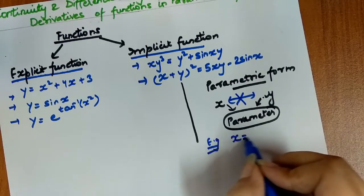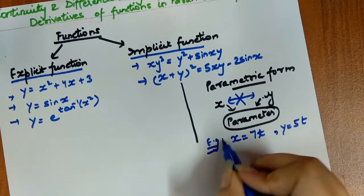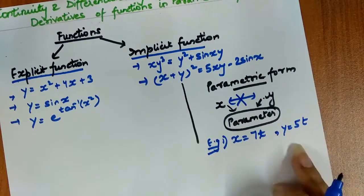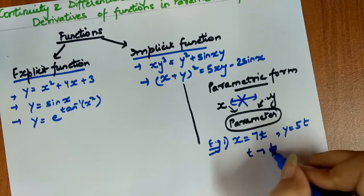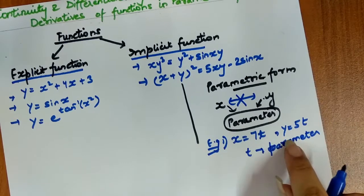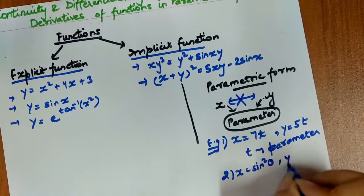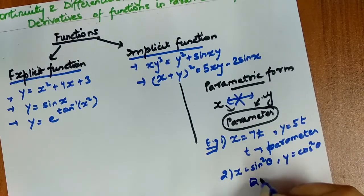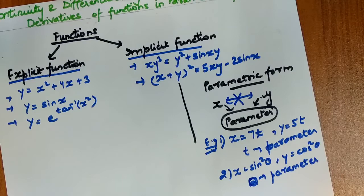For example, x = 7t and y = 5t. Here t is our parameter. x and y are not directly connected; they are connected through t. Another example: x = sin²θ and y = cos²θ, where θ is the new parameter. Again x and y are not directly connected — they are connected through the parameter θ. So now the concept of parametric form should be clear.